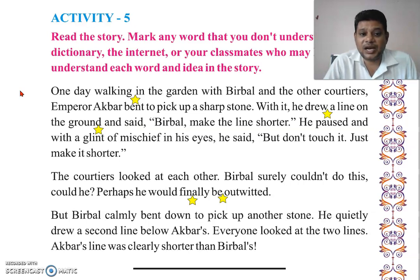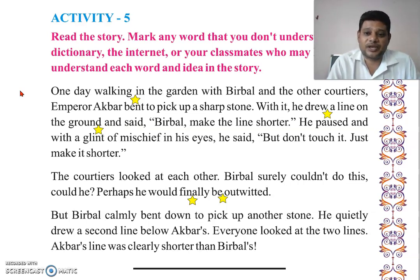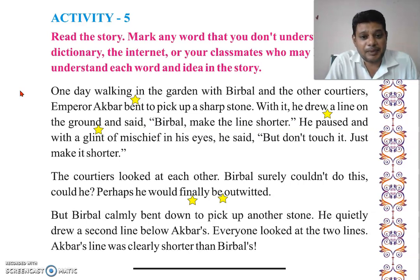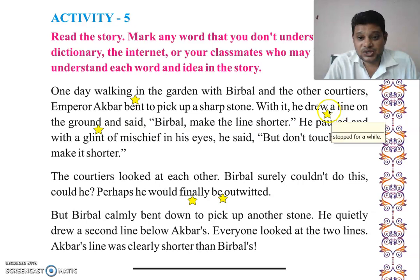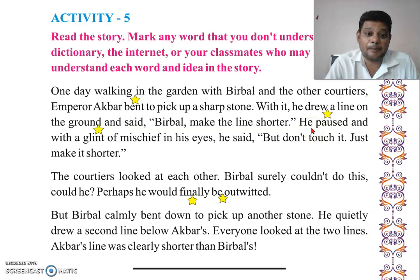With the stone, he drew a line on the ground. Then he paused — 'posed' means stopped for a while. He paused, and with a glint of mischief in his eyes, he said: 'But don't touch it — just make it shorter.'